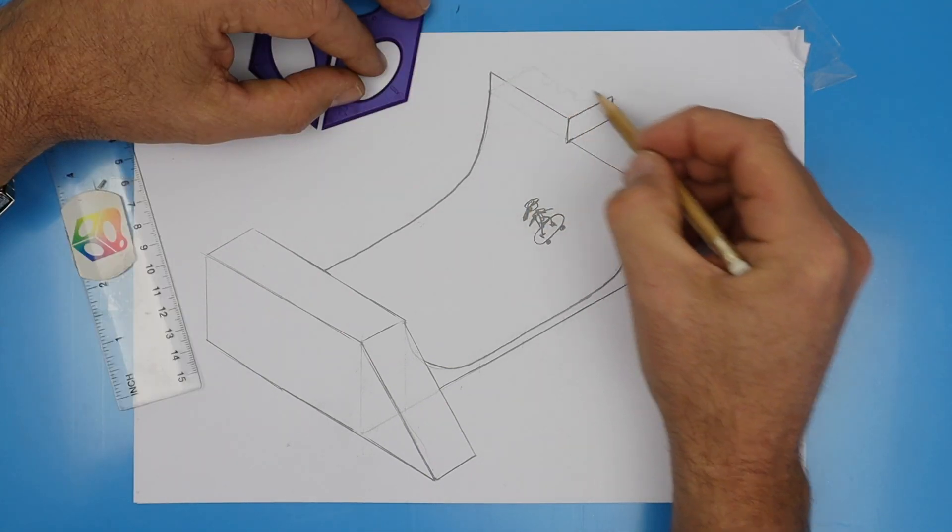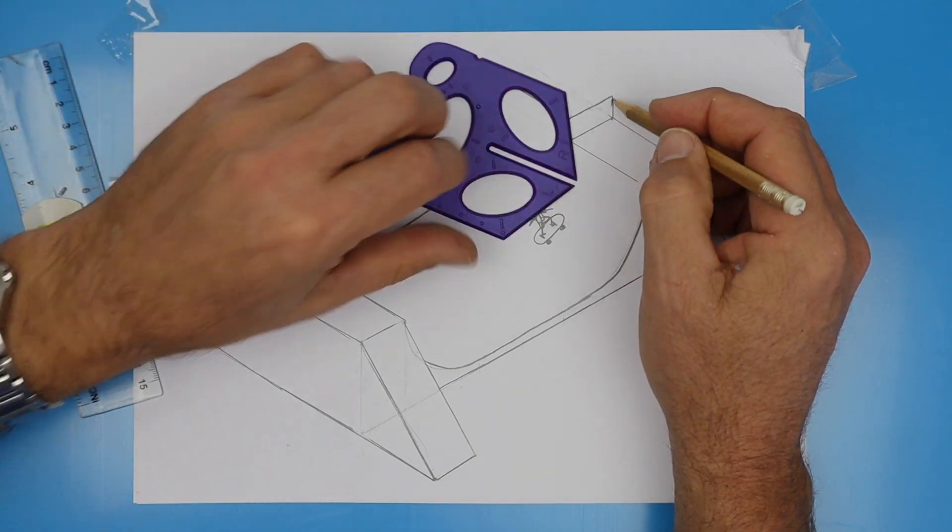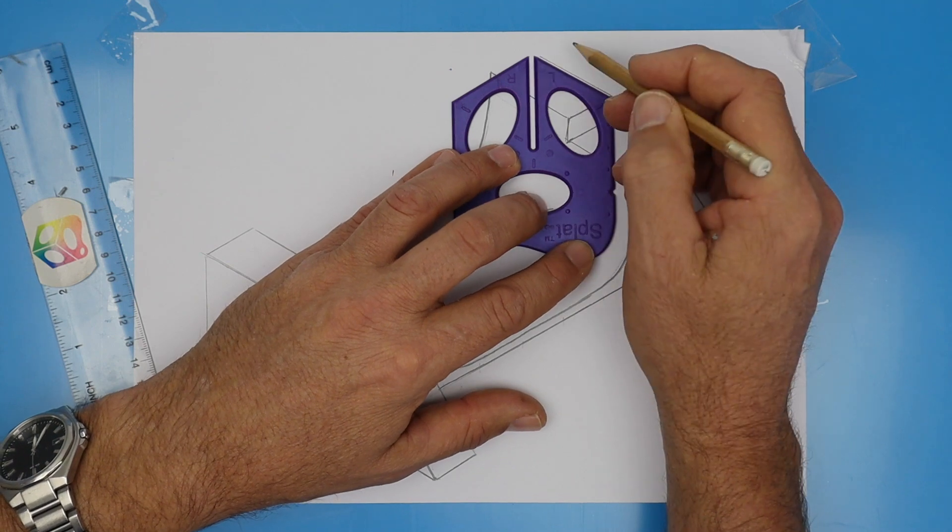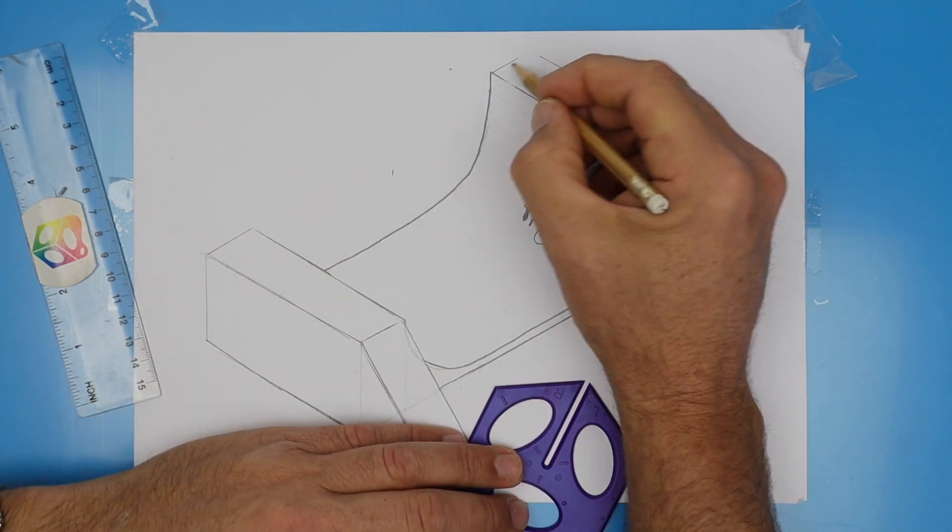And then we're going to complete those two back edges. To do that, rotate your splat and then use that angle for the long edge and that one for the short edge.